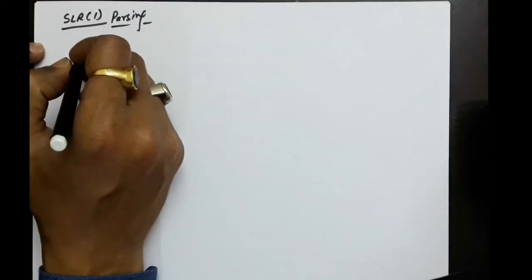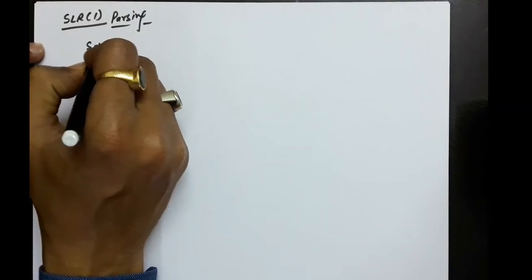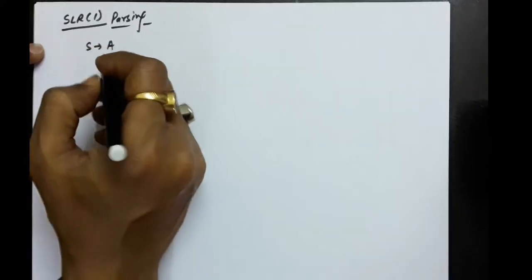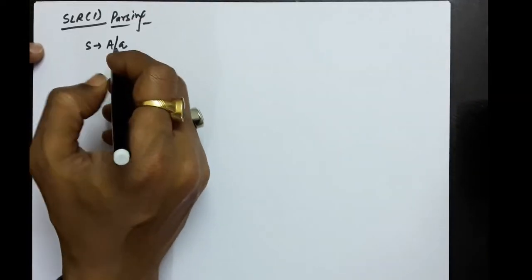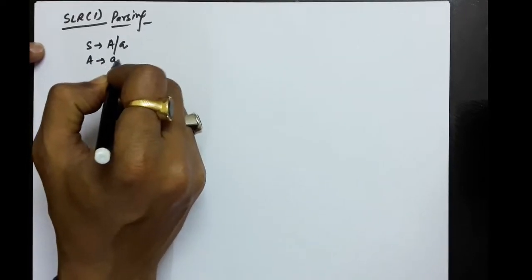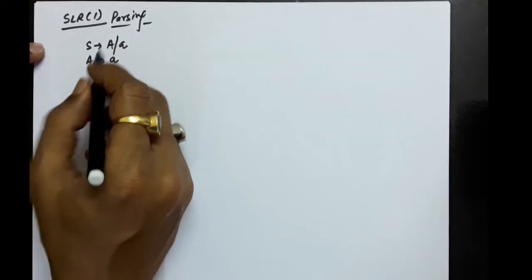We will take more examples for the SLR1 parsing table. Let's suppose we have a grammar where S produces capital A and small a, and A produces small a.